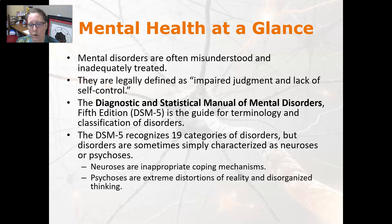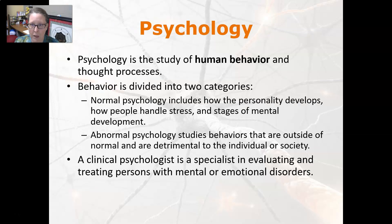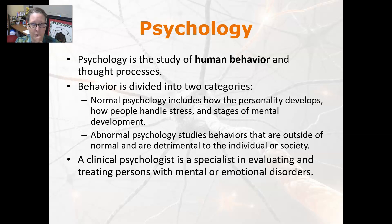Psychoses are extreme distortions of reality and disorganized thinking. Psychology is the study of human behavior and thought processes, divided into two categories. Normal psychology includes how the personality develops, how people handle stress, the stages of mental development, productivity, and different areas. Abnormal psychology studies behaviors that are outside of normal and that are detrimental to the individual or society.